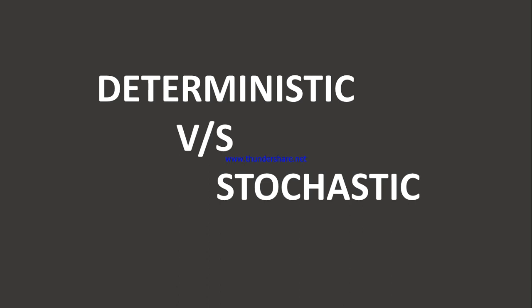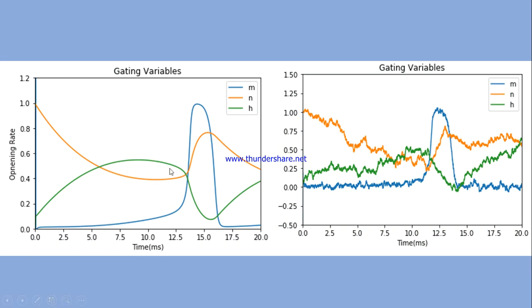Here we have two types of graphs: the gating variable of a deterministic as well as a stochastic model. This gating variable is from the neural model. In a neuron, when the action potential is conducted, it has a typical spike curve caused by the opening and closing of sodium and potassium gates during depolarization and hyperpolarization. The kinetics of the sodium and potassium channels are governed by individual gating variables — m and h for sodium, and n for potassium — defined by differential equations. The deterministic curve is very smooth with no visible deviations.